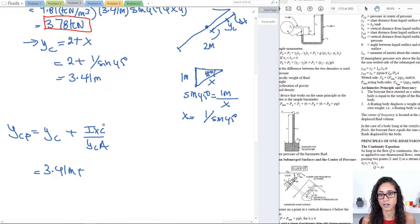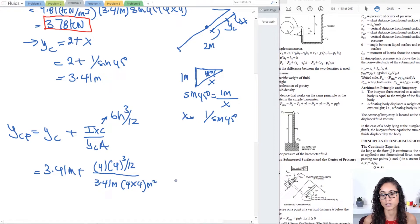So I'm going to write it here, BH cubed over 12. I have a square so it doesn't matter which one is H or which one is B. So I have 4 cubed divided by 12 and this whole thing is divided by YC which is 3.41 meters times the area which is 4 times 4 meters squared. Note that the units cancel nicely. We have meters times meters to the power of 3, that's meters to the fourth. Here we have meters cubed. Cancels out. You're left with meters.